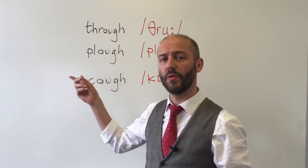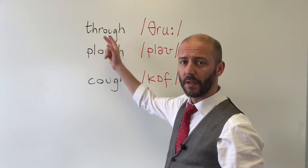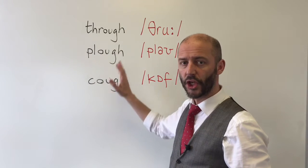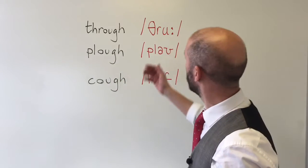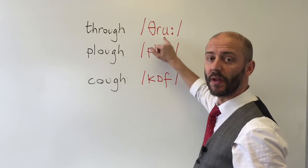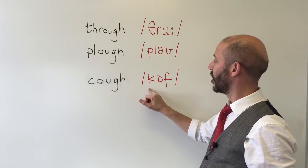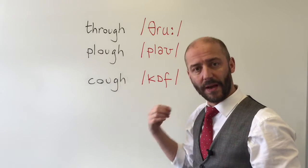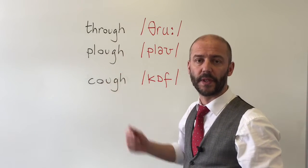Three words with O-U-G-H: 'through', 'plough', 'cough' — totally different sounds. So if you look in your dictionary you'll have the phonetic symbols. Without these, and without somebody who does know the pronunciation, you're going to have real problems.